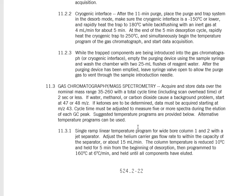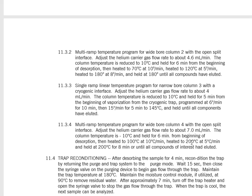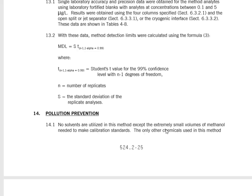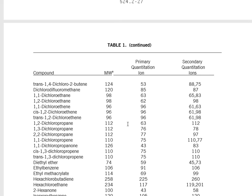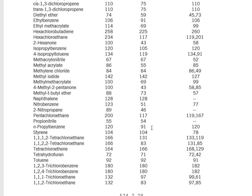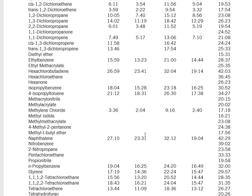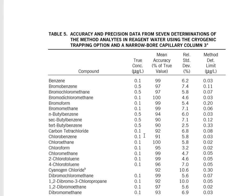For the GCMS settings: column temperature is reduced to 10°C and held for five minutes, then programmed to 160°C at 6°C per minute and held until all components have eluted. A couple of different options are given depending on preference. Scrolling further, it gives information on each compound it can measure, with retention times — or close approximations — depending on which column is being used. Notice that compounds can elute at different points in time.